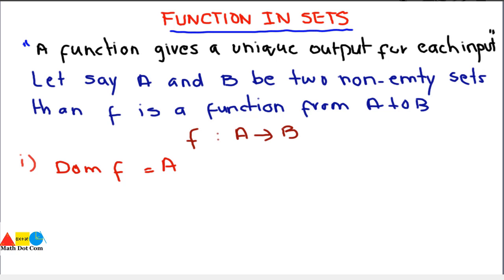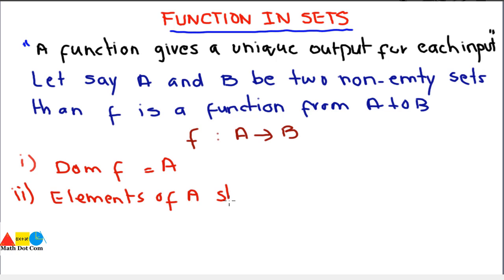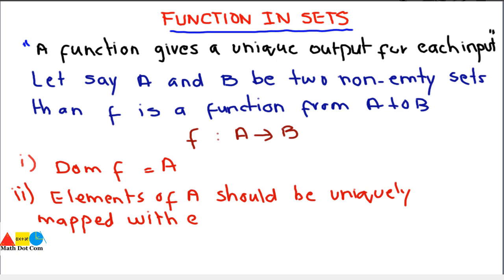We can say that f is a function if and only if two conditions are met. The first condition is that the domain of f must be equal to A. We will discuss this through an example shortly — for now, just know the two conditions.